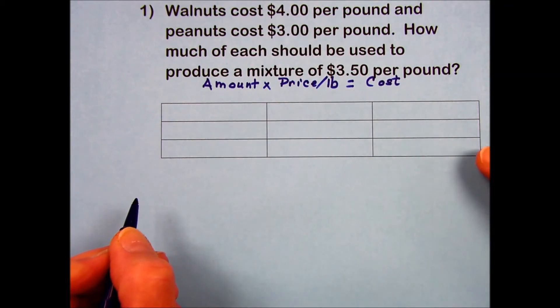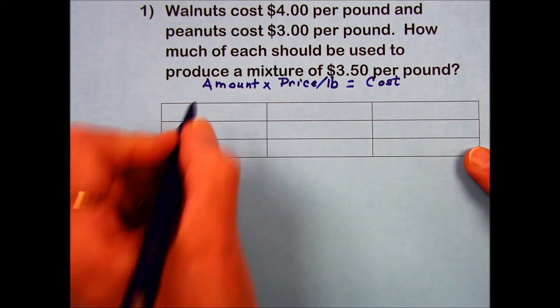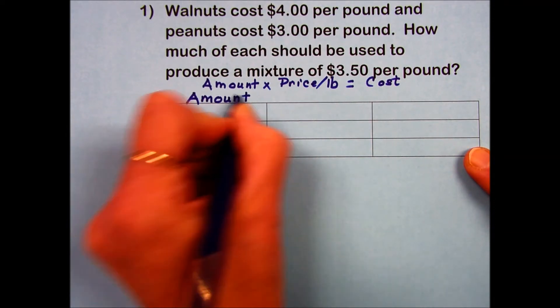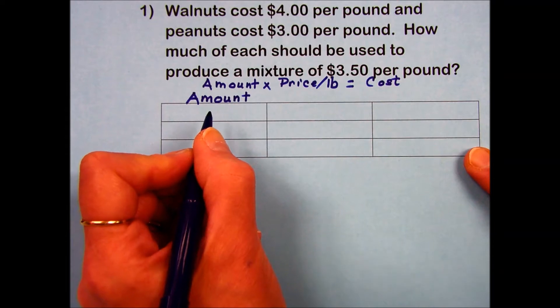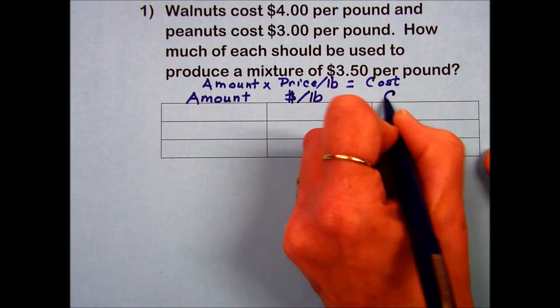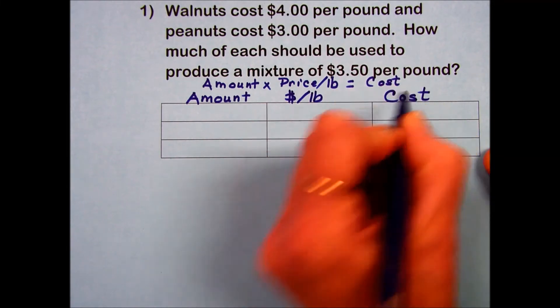I'm using a table to help identify the information here. In this first column I'm going to put the amount of each of these different types of nuts, the price per pound, and then the resulting cost when we multiply them.